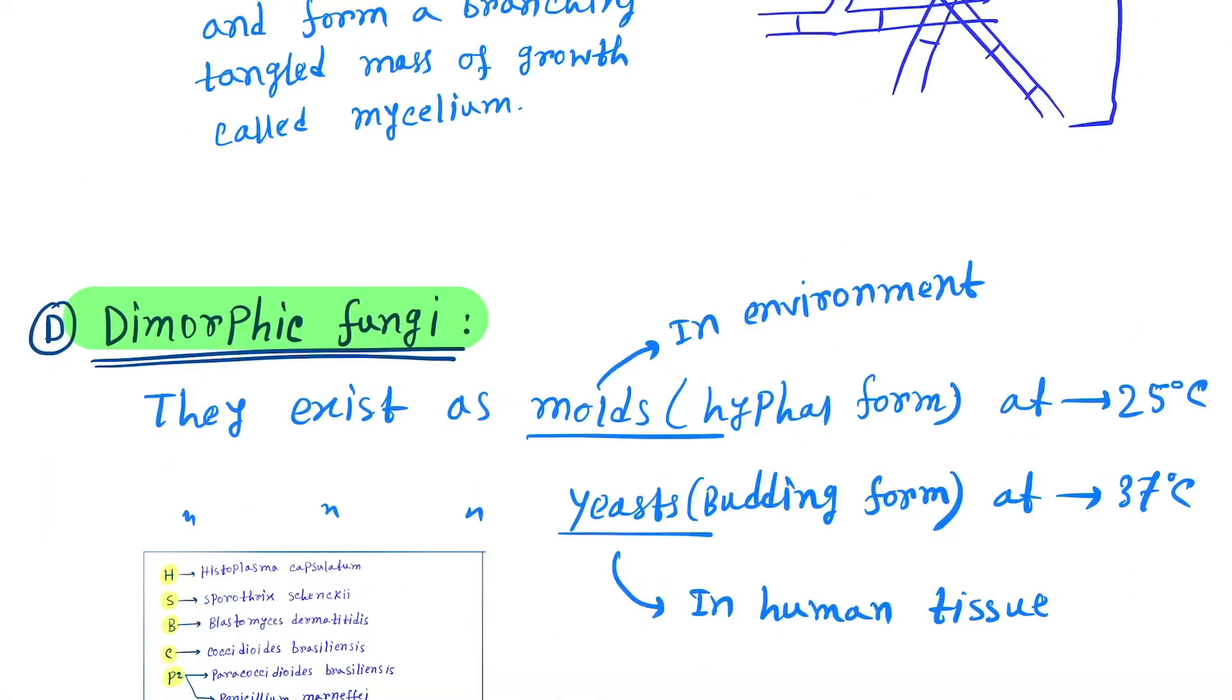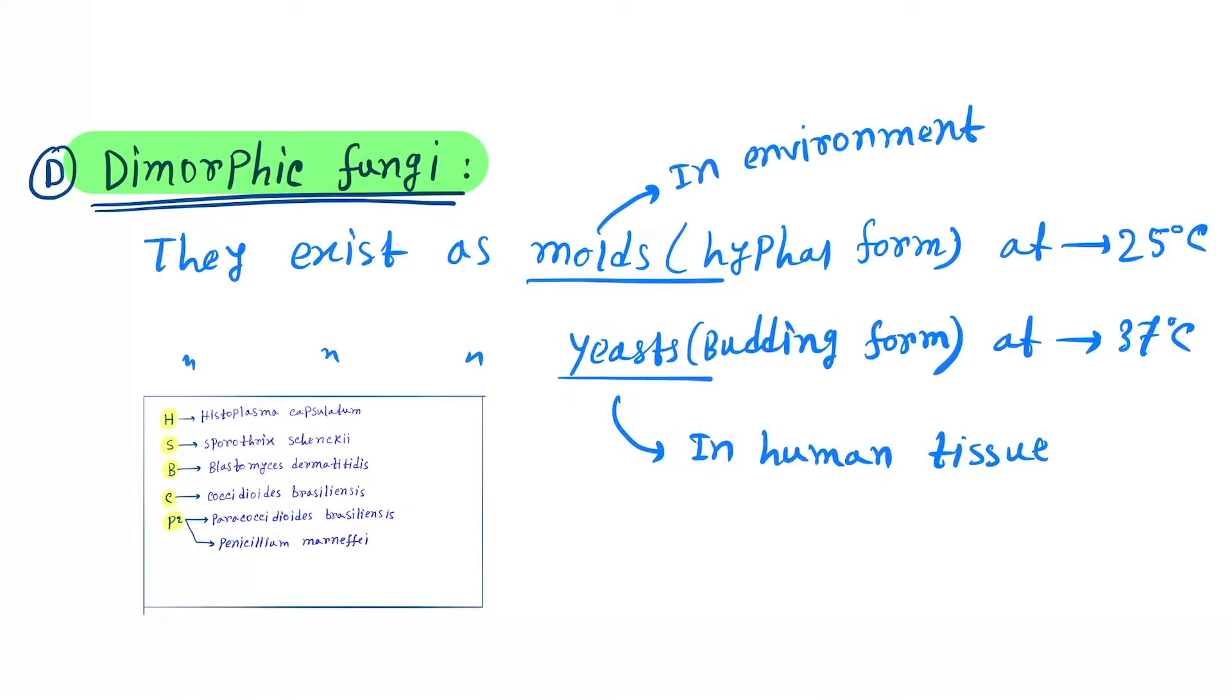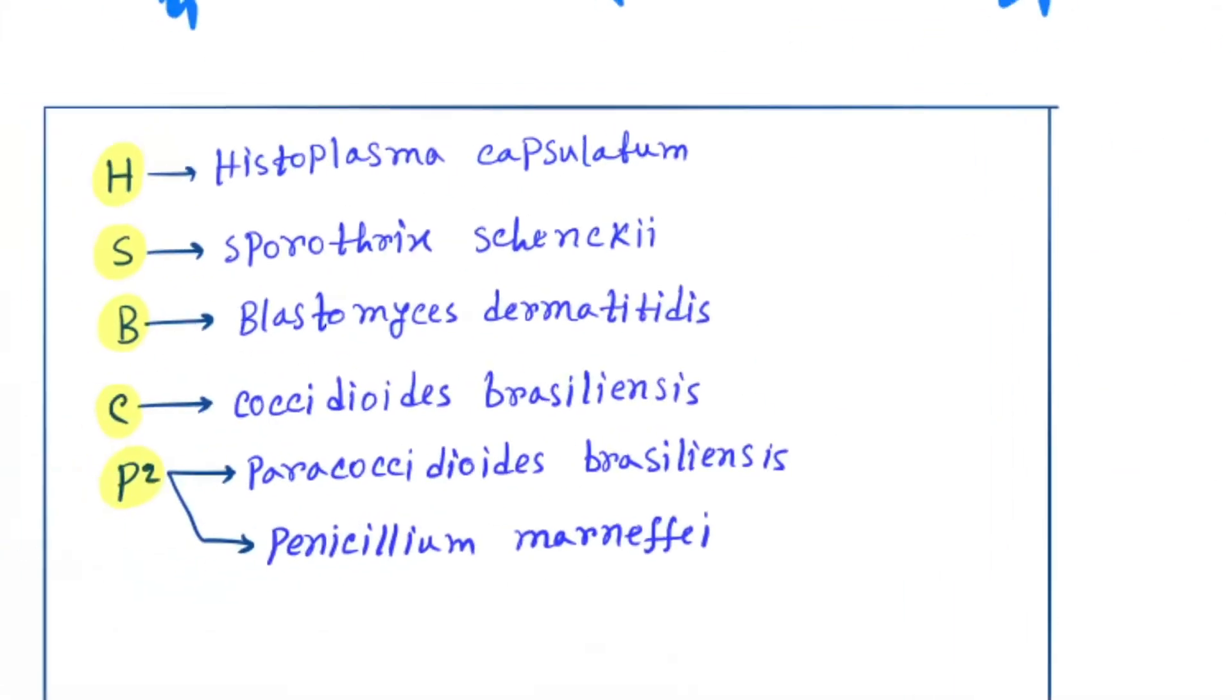Next one is dimorphic fungi. They exist as molds and yeasts. Why is it called dimorphic? Because they exist in two morphological forms - first one is molds and another one is yeast. Molds are hyphae form and yeast are budding form. Molds are seen at 25 degrees Celsius and yeast form is seen at 37 degrees Celsius.